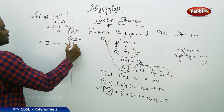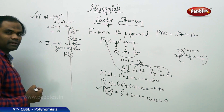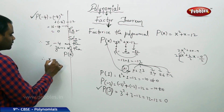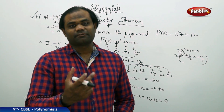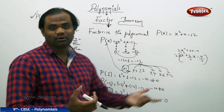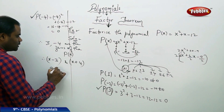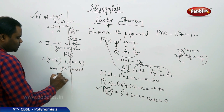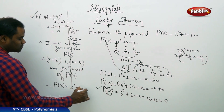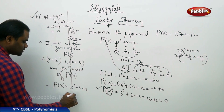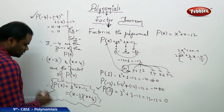Therefore 3 and minus 4 are the zeros of the polynomial P of x. Now, from the Remainder Theorem, if the remainder is 0, then x minus a is a factor of the given polynomial P of x. So x minus 3 and x minus of minus 4, that is x plus 4, are the factors of P of x. Therefore my P of x, which is x squared plus x minus 2L, can be written as the product of the factors: x minus 3 times x plus 4. This is how I understand factorization through the Factor Theorem.